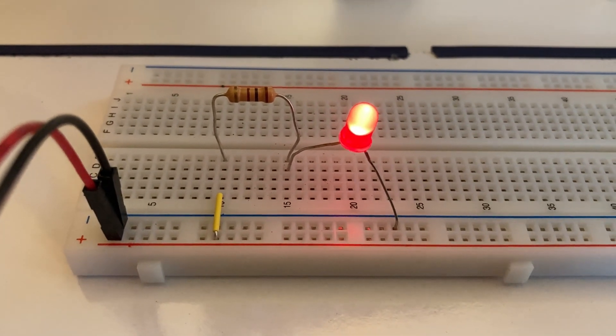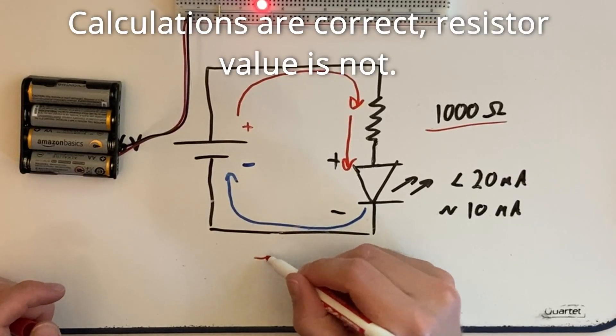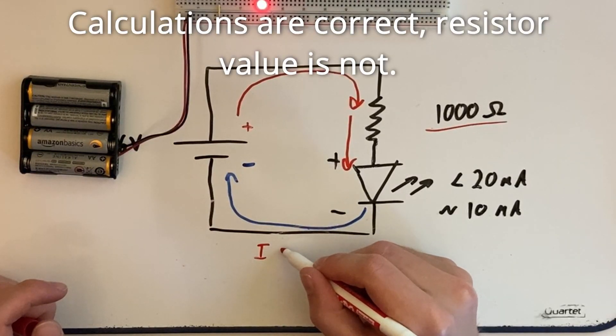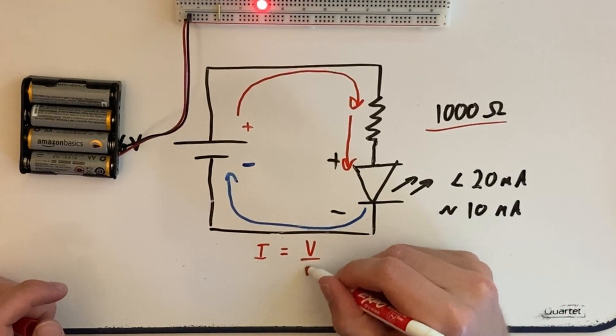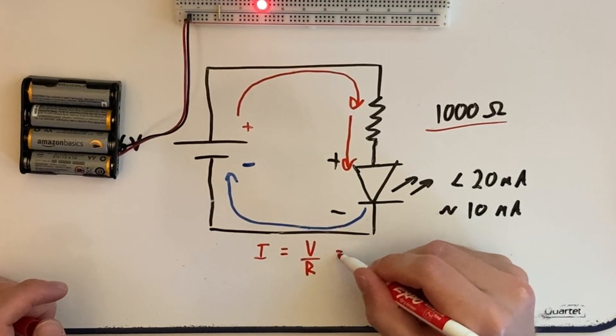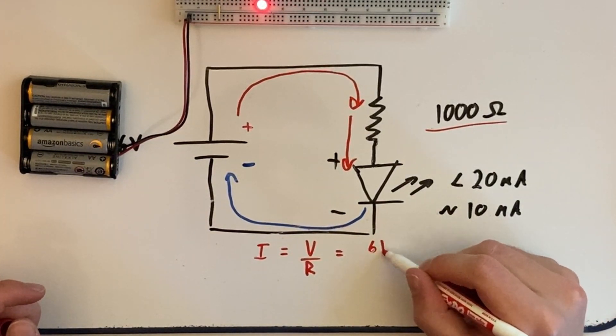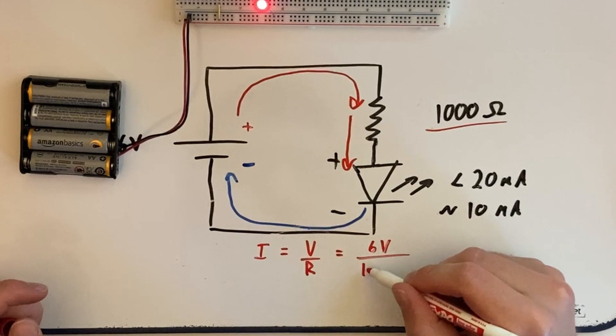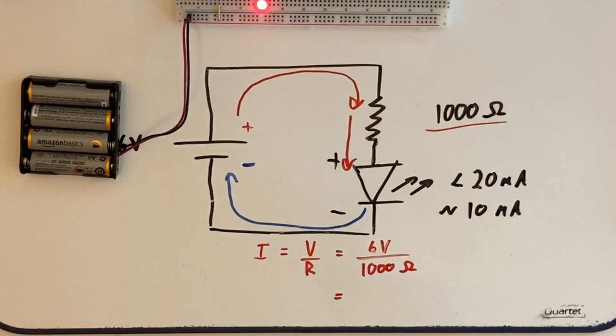One final thing we should do for consistency is redo our current calculations. So this time our unknown becomes current and our Ohm's law equation becomes I equals V over R, which is just six volts over 1000 ohms. After a quick second of thought you should realize that the answer is just six milliamps, which is six shifted over three decimal places because you're dividing six by 1000.